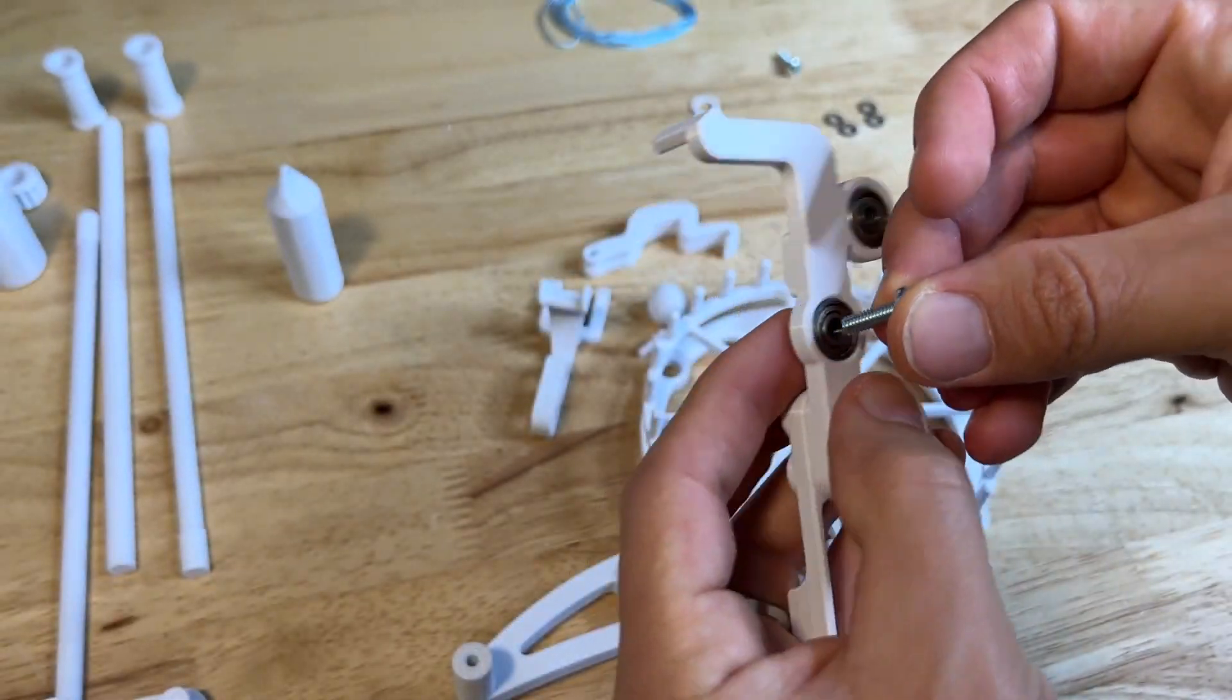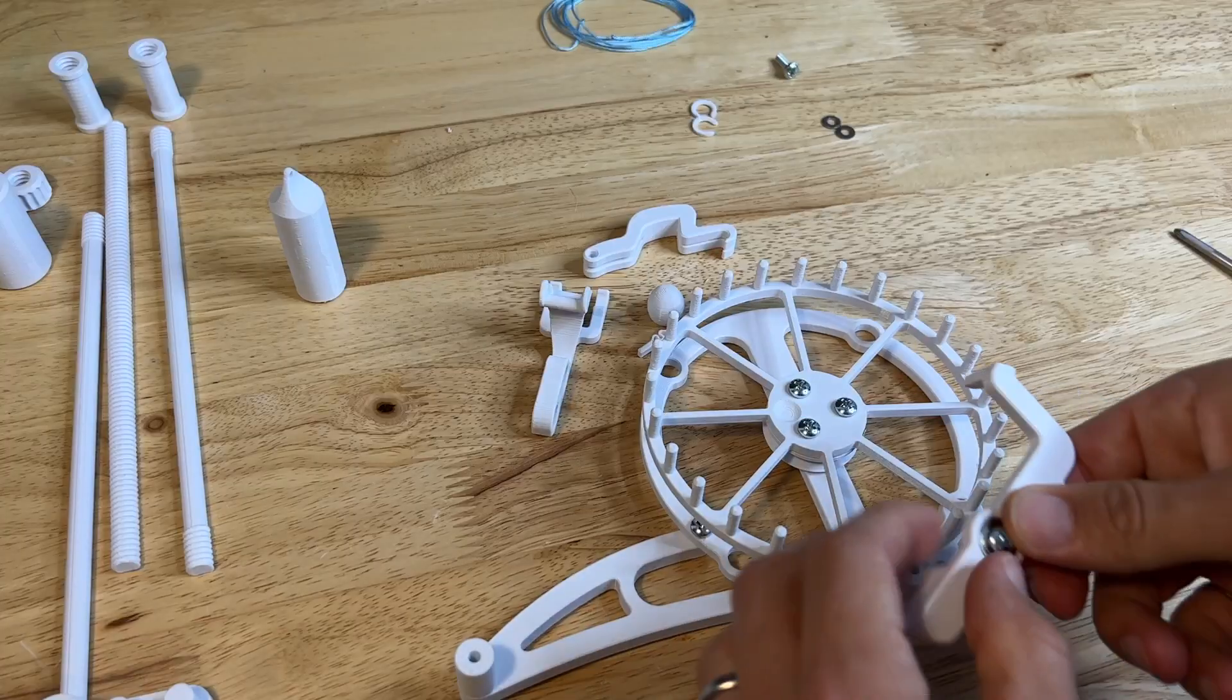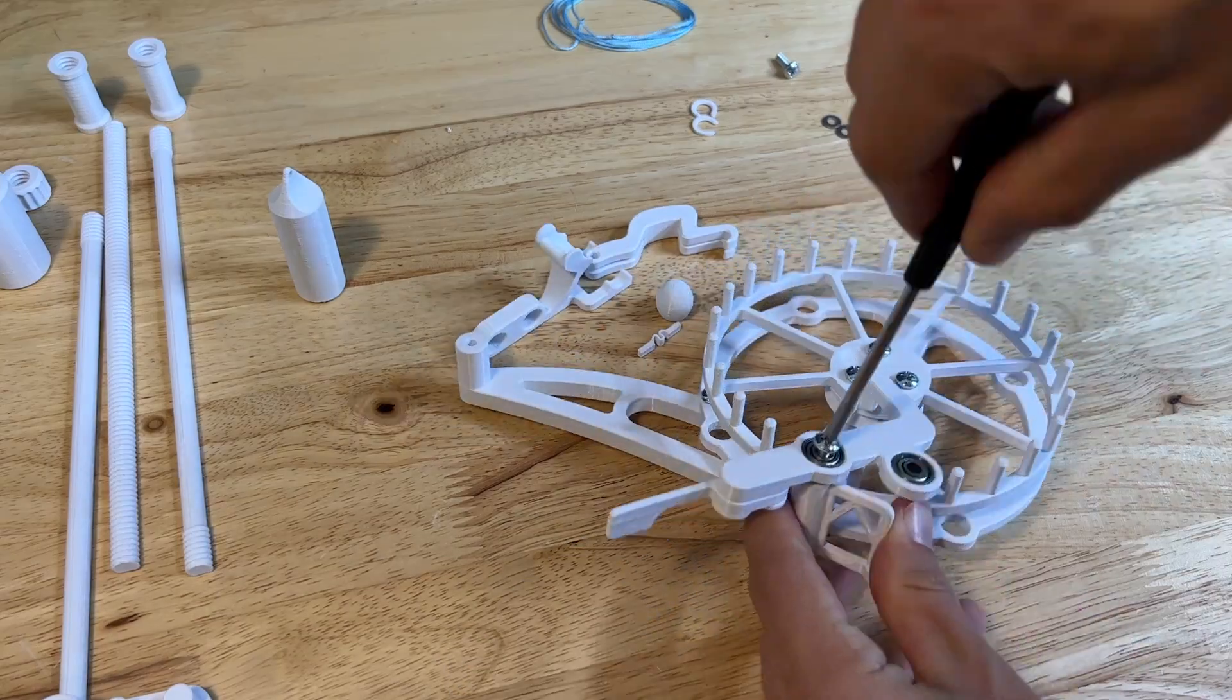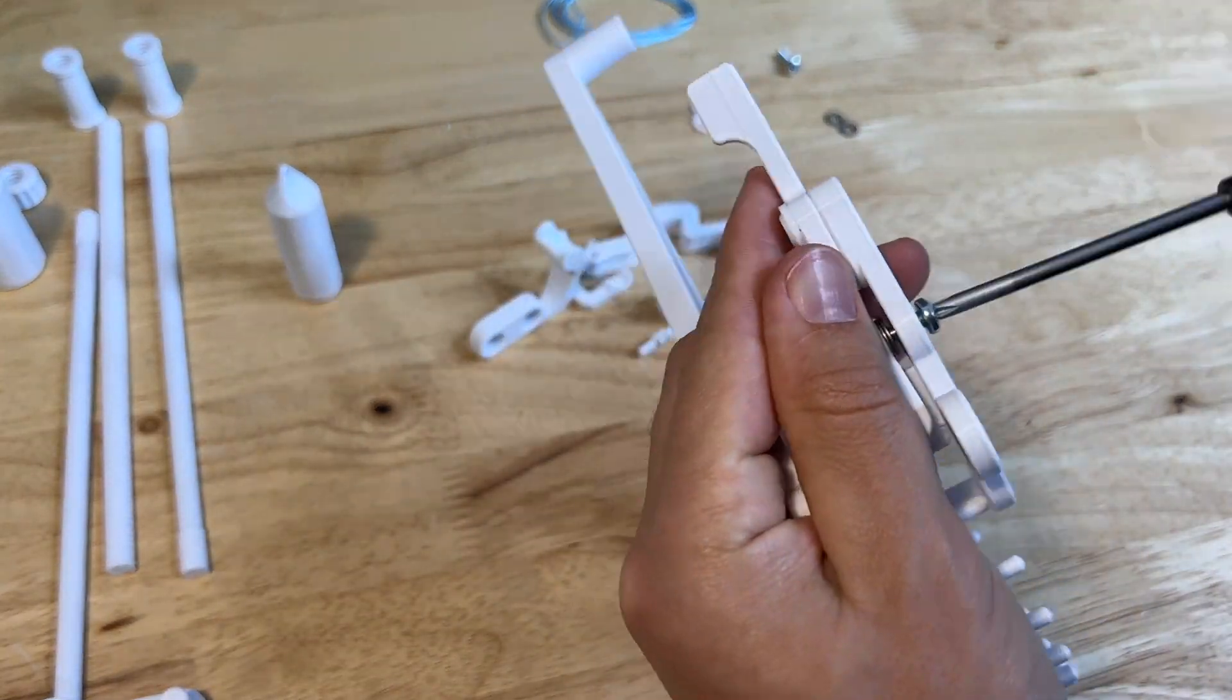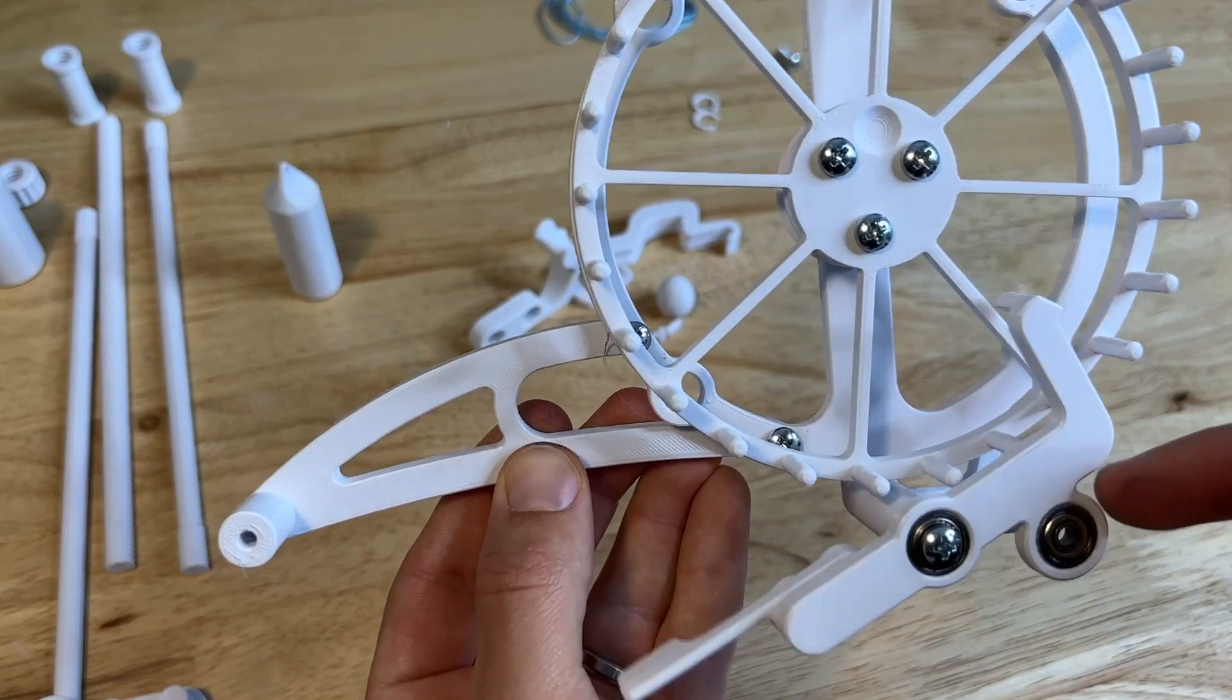Then using an M4 by 12 millimeter screw with two washers on the end of it, that will screw into the hole in the lower part of the base. And make sure that it drops just like this.